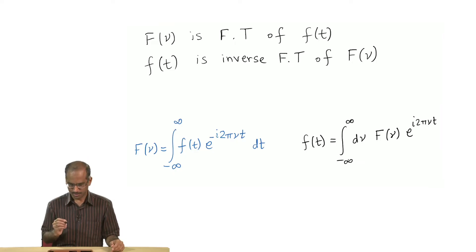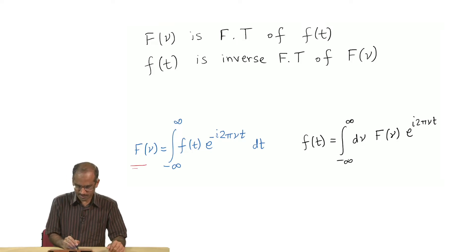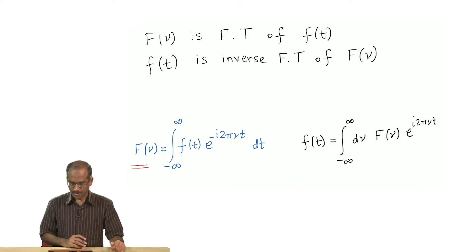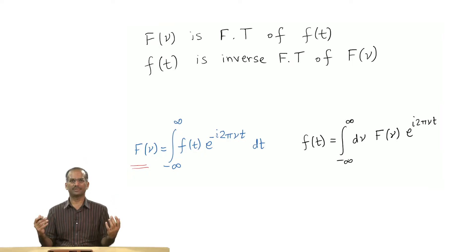If that were so, in that case I have this pair of transforms. F of nu, nu is the frequency in such a case. Capital F nu is given by this integral and it is simply the Fourier transform of f of t.